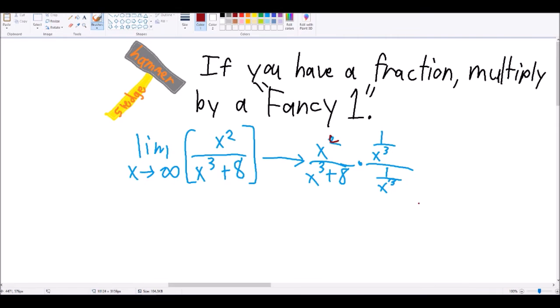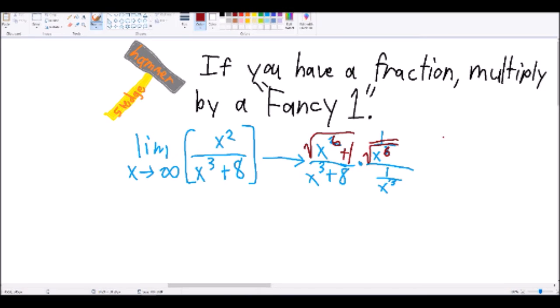If you have square roots, say the numerator says square root of x to the sixth plus 1, you can replace the top part of the fancy fraction with 1 over square root of x to the sixth. It's the same as saying 1 over x cubed in the top, but now you can use square root properties to sneak it into the square root.